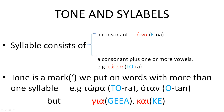Now that we have defined what a syllable is, let's define what a tone is. Tone is a mark we put on words with more than one syllable to emphasize them. Simple examples are the words tora and otan, which means when. As you can see, the letter omega in the word tora has a small little line on top of it, and the same with the letter omicron in the word otan.